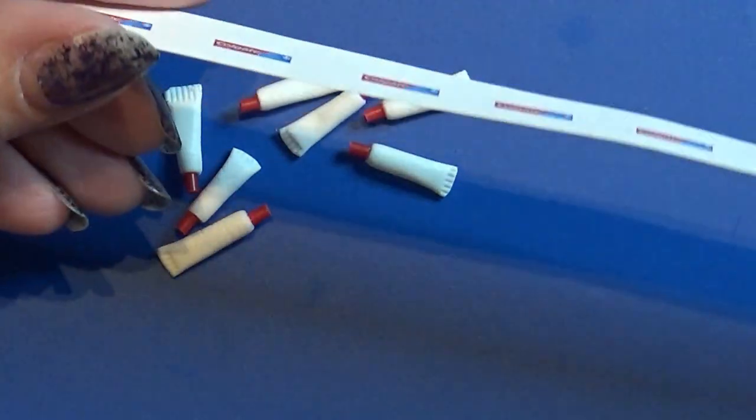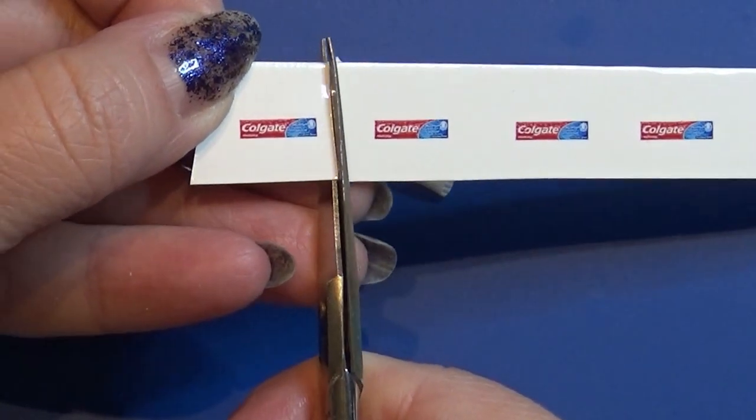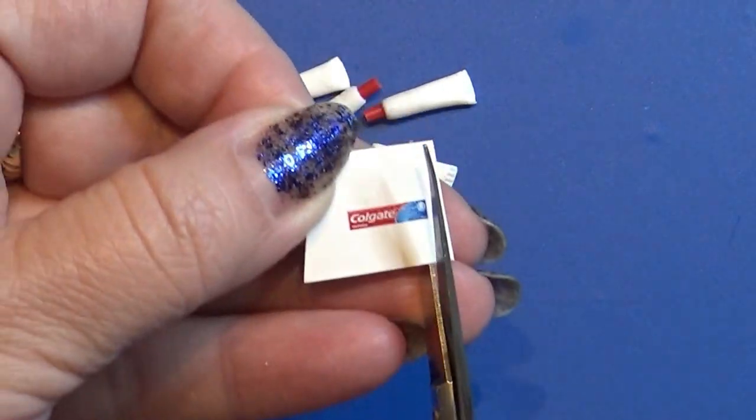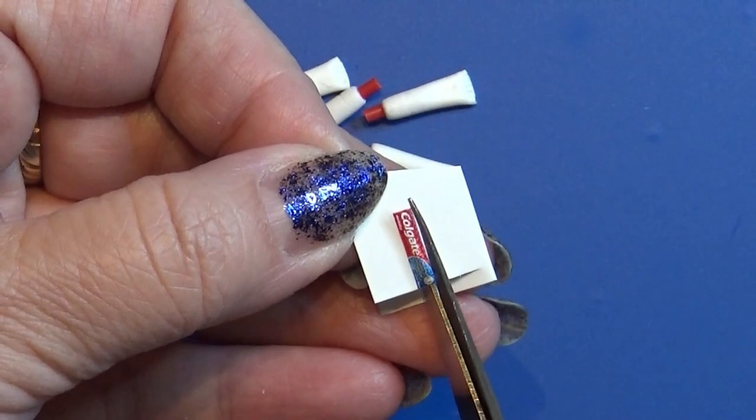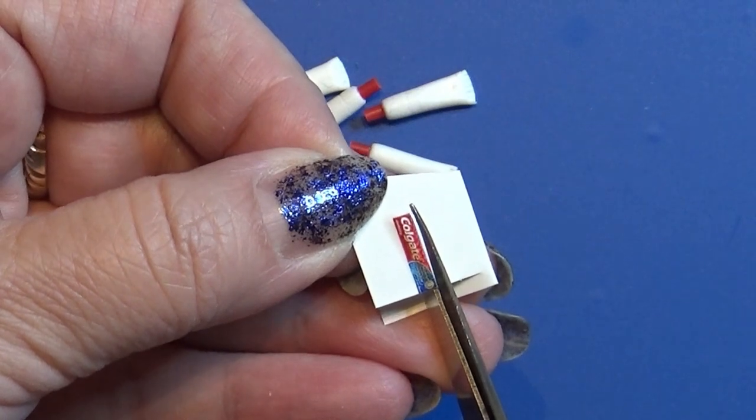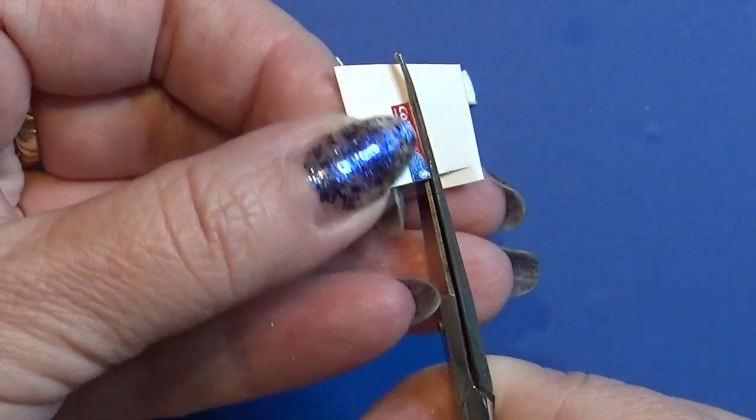Then I printed out the label for my toothpaste on some water decal paper and I glazed the top of the paper so that it can be in the water without smearing off the print. Cut it out in the right size.